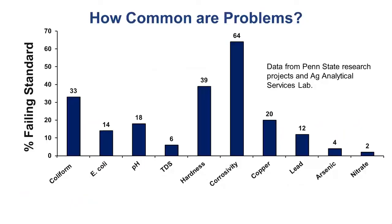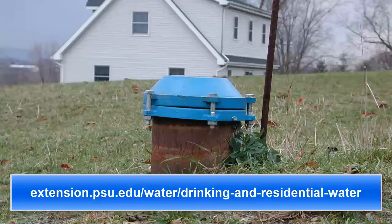Many homeowners wonder how their water compares with typical water test results across Pennsylvania. Data from thousands of private wells and springs analyzed at Penn State show that many parameters are quite common. For example, 33% have unsafe levels of coliform bacteria, 14% have unsafe levels of E. coli bacteria, 64% are considered corrosive, and 12% have unsafe levels of lead. Overall, 40% of the private drinking water supplies fail at least one health-based drinking water standard, and many more fail one of the aesthetic standards.